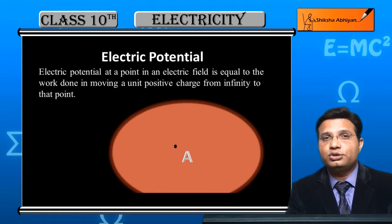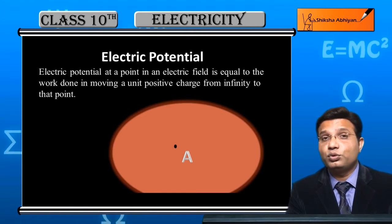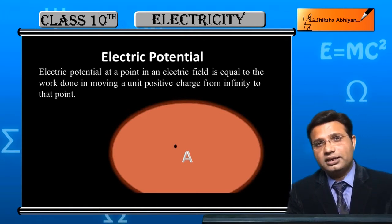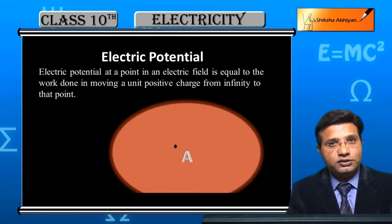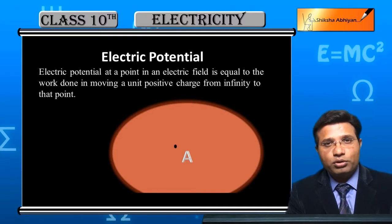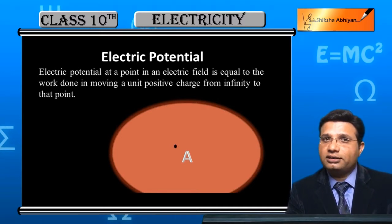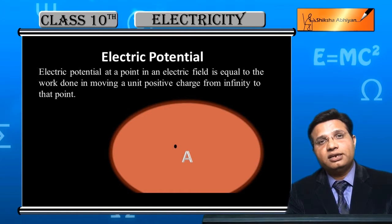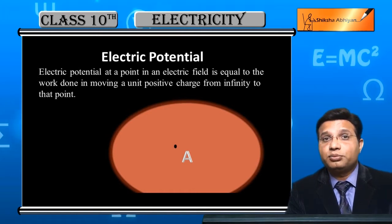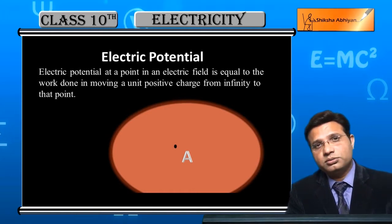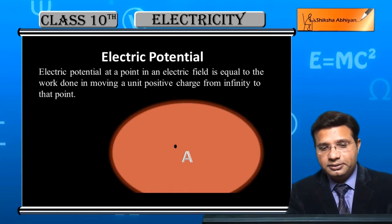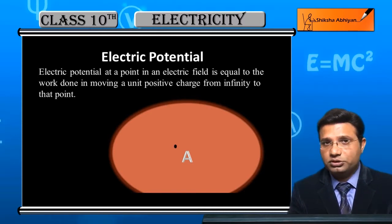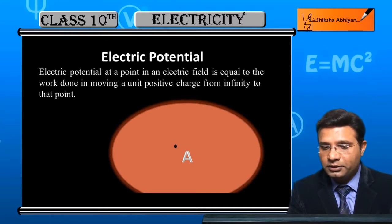Current is moving, or current will be flowing — potential difference is very important for electric current to flow. This is exactly what potential difference means, which we can understand through an animation.